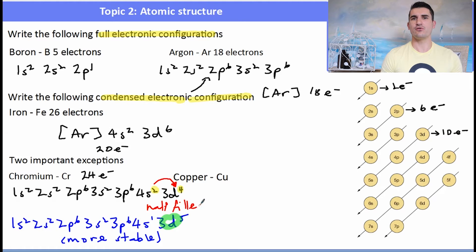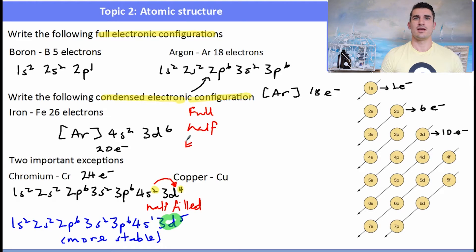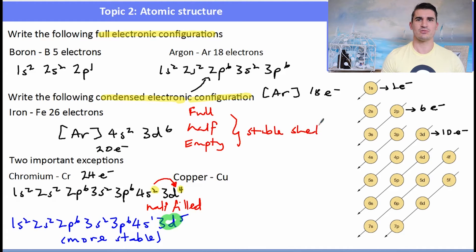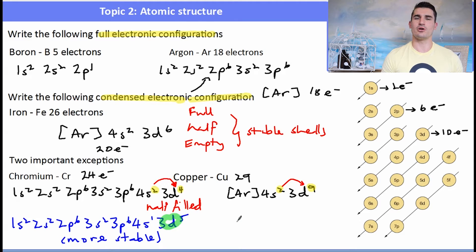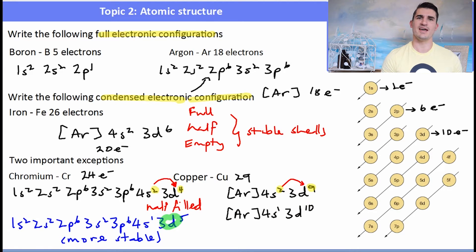The stability rules are: a full subshell is stable, a half-filled subshell is stable, and an empty subshell is stable. Copper is also an exception — it would be 4s² 3d⁹, but it promotes one 4s electron to give a full 3d¹⁰ subshell, resulting in [Ar] 4s¹ 3d¹⁰. A full 3d and half-filled 4s are both stable, which explains copper's configuration.